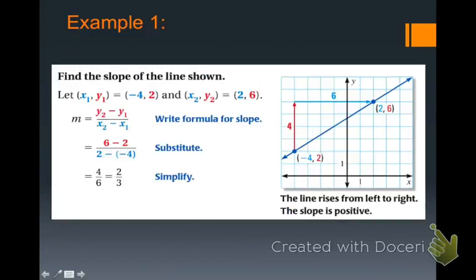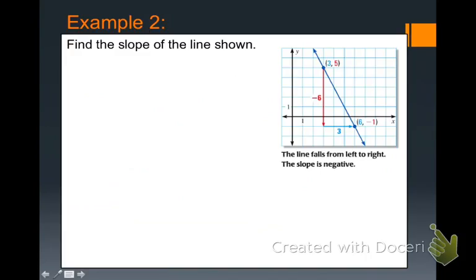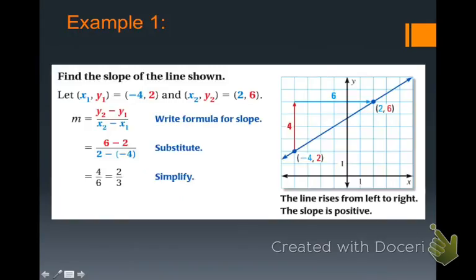Let's take an example. If we want to find the slope of the line graphed to the right, first we need to see what are our two points. They've been nicely labeled for us. We have points at negative 4, 2 and 2, 6. It doesn't matter which one you pick as the first point and which you pick as the second. In this case, we'll pick x1, y1 as negative 4, 2 and x2, y2 as 2, 6.